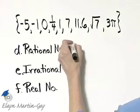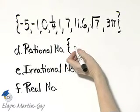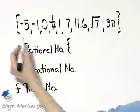Now let's write down the rational numbers. Remember a number is a rational number if it can be written in the form A over B, where A and B are integers, but B, the denominator, is not zero.